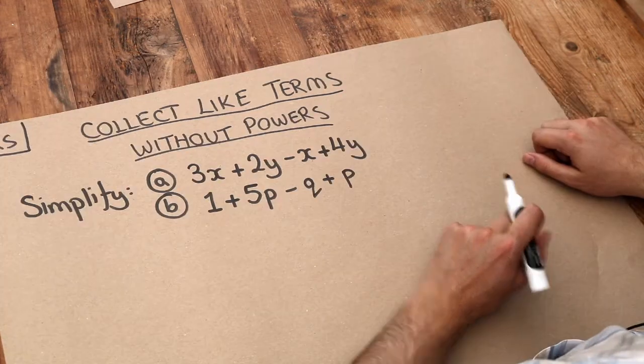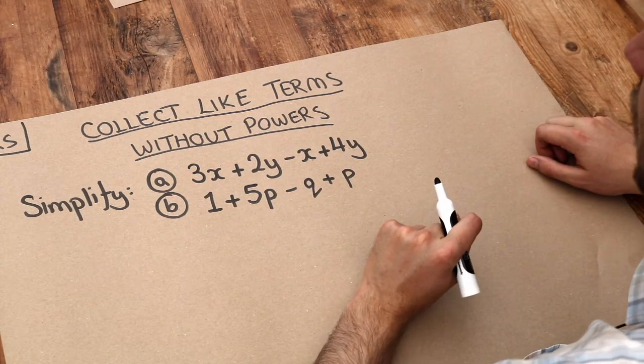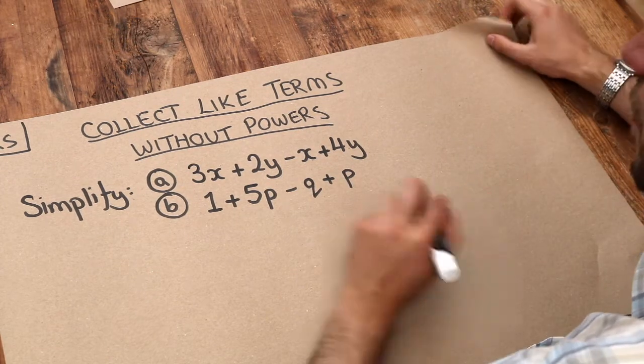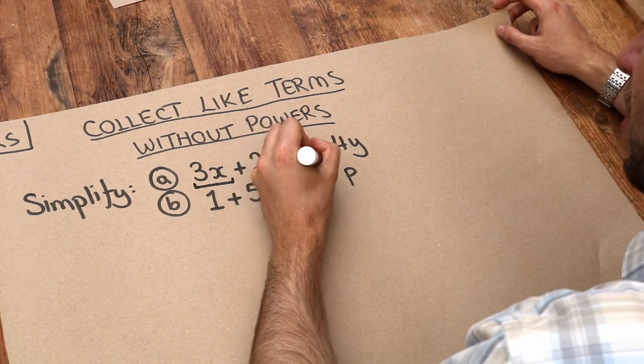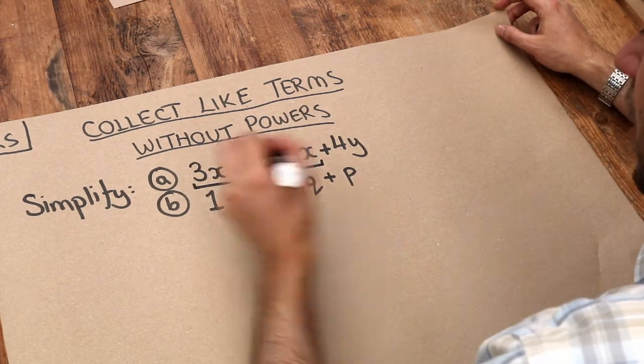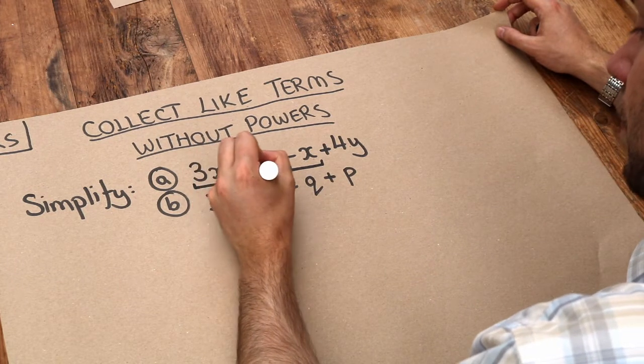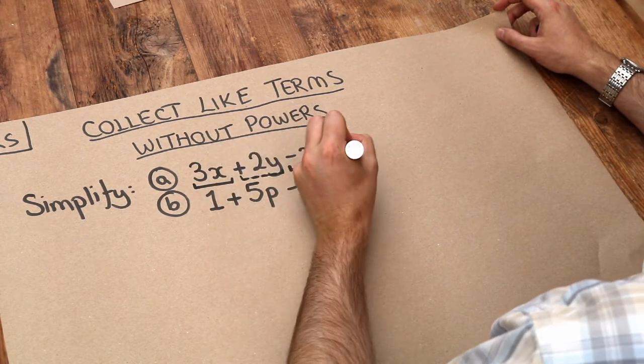Now when we have a mixture of different variables we collect together the terms involving the same variable. So this term here involves just x and this term here is minus x, and we can also underline these other ones as well. We've got the plus 2y and the plus 4y here.